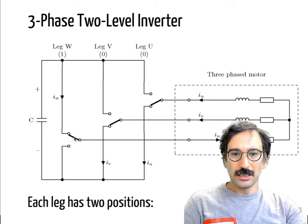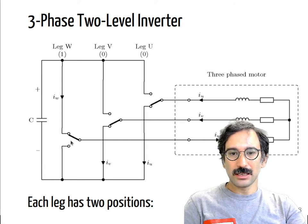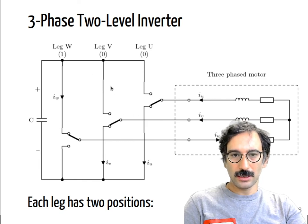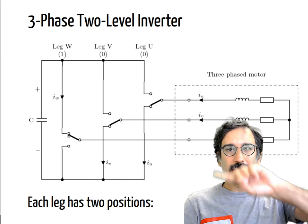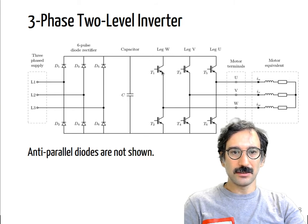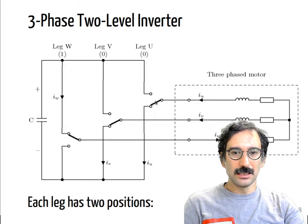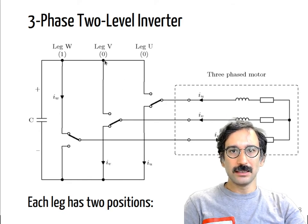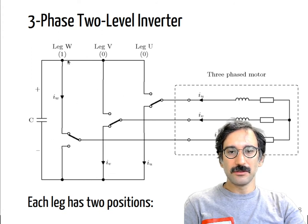Each leg can be modeled like a two-position switch: either that switch is connected to the upper leg position, sending VDC to that node, or it can be connected to the bottom position where zero volts is applied. We define: if the top transistor is on and bottom is off we apply VDC — we call that position one. If the bottom switch is on and the top switch is off, we call that position zero.